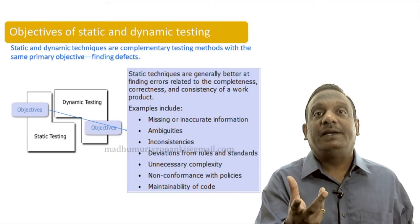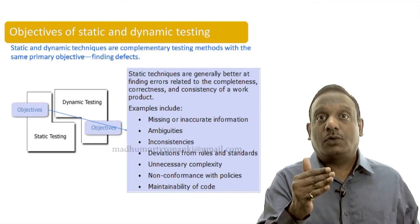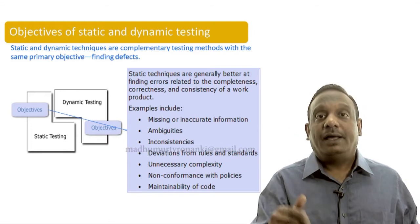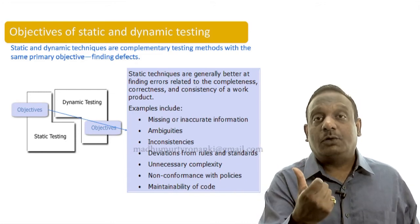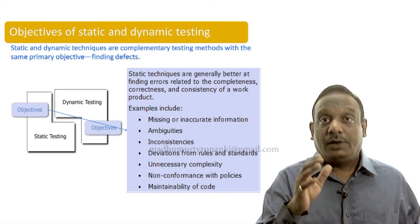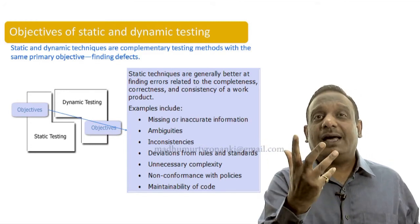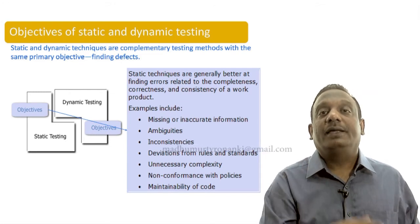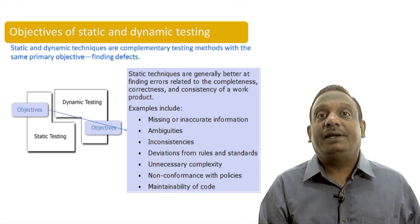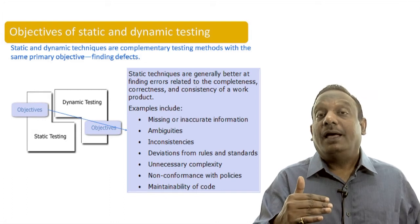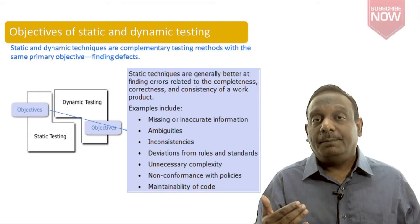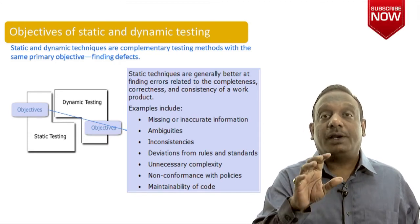Whenever there is a problem happens in that complex code, people will not be able to easily debug and correct it. That is why a good code has to be simple. The complexity has to be reduced. We talk about that later in a lesson about what we call cyclomatic complexity of code or control flow structure. If a program is having unnecessary complexity, it can be found by static analysis tools. Non-conformance with policies and maintainability of code. Complex code is less maintainable. What is the meaning of maintainability? Ease with which you can perform change.